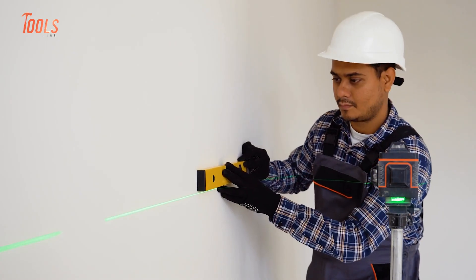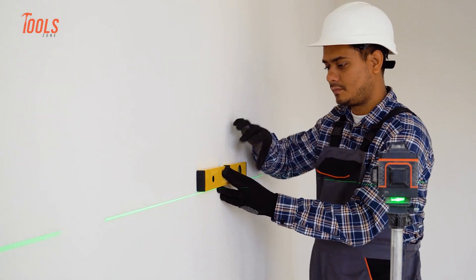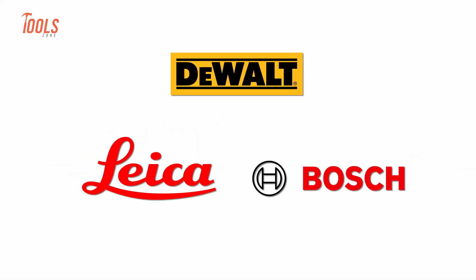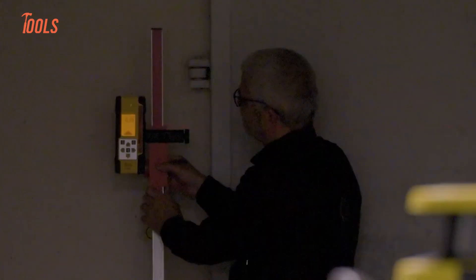Finally, one of the more overlooked reasons behind the price difference is brand reputation and calibration quality. Big names like Leica, Bosch, or Dewalt invest heavily in research, precision engineering, and quality control.